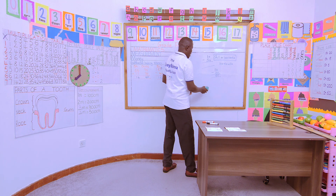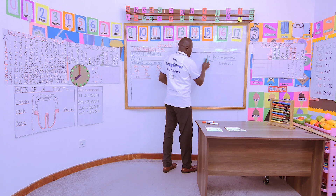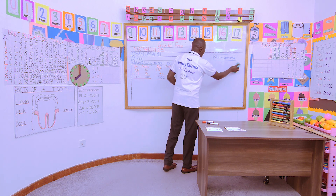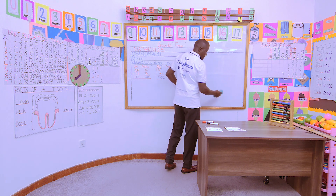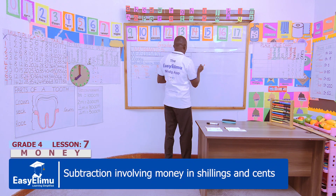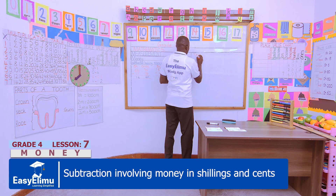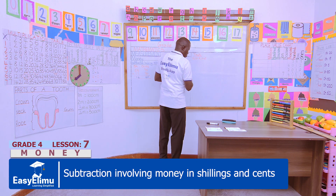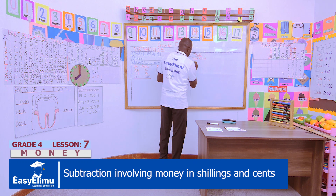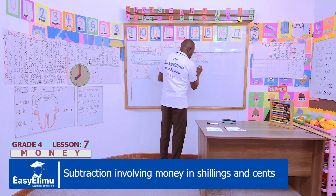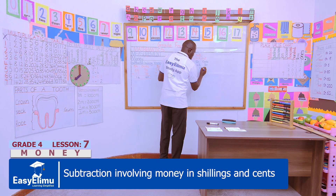With this in mind, can you try to solve the following tasks? Task number one: work out the subtraction of shillings and cents. Number one — 43 shillings and 30 cents take away 9 shillings and 80 cents.